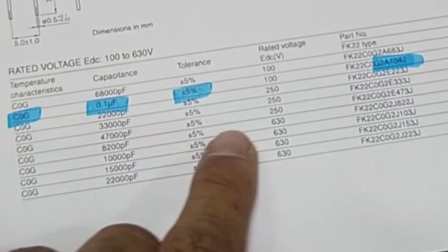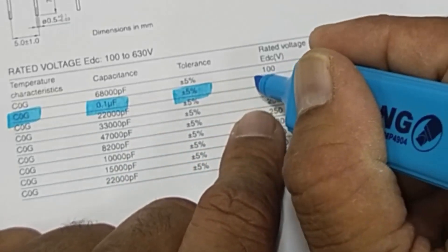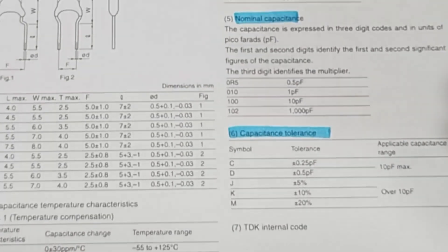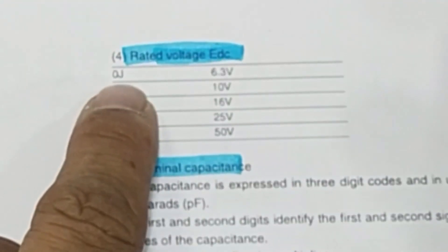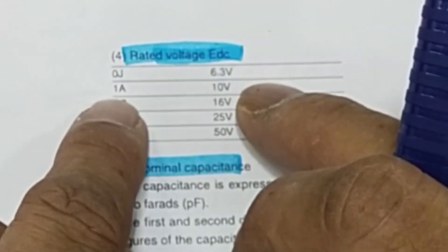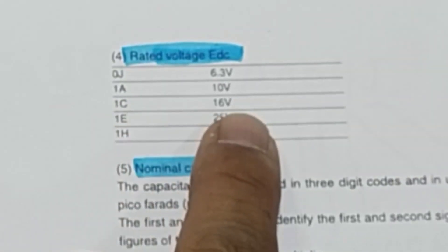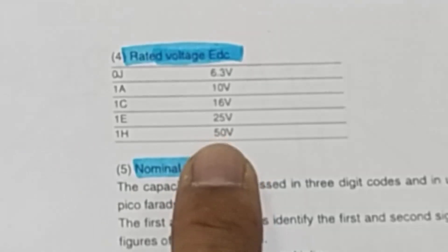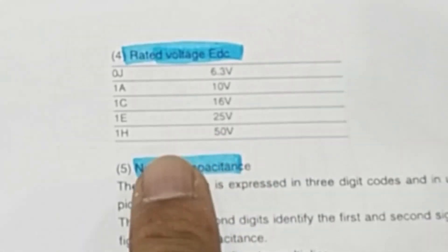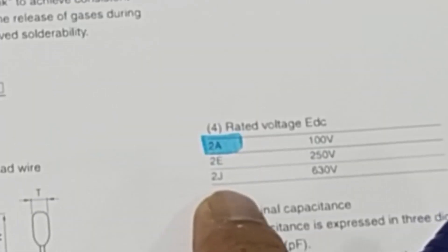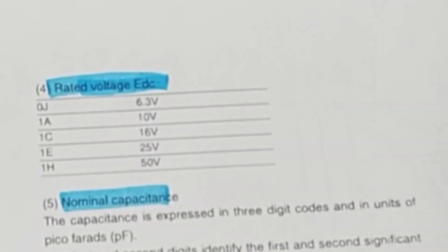For additional knowledge about rated voltage codes: 0J = 6.3 V, 1A = 10 V, 1C = 16 V, 1E = 25 V, 1H = 50 V, 2A = 100 V, 2E = 250 V, 2J = 630 V.